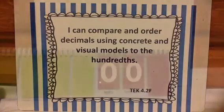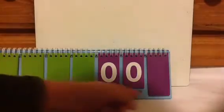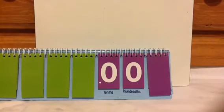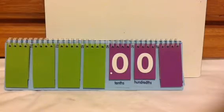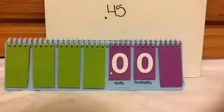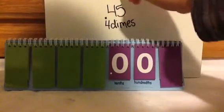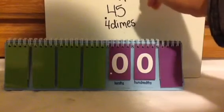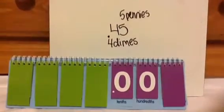So first thing you need to know is there are two place values after the decimal. When you get to 5th grade, the 5th grade TEKS has thousandths, but we're just going to focus on tenths and hundredths. Suppose you had 45 cents — what's a way you could represent it? They'll say 4 dimes and 5 pennies. For the purpose of this lesson, we're going to stick with dimes and pennies.